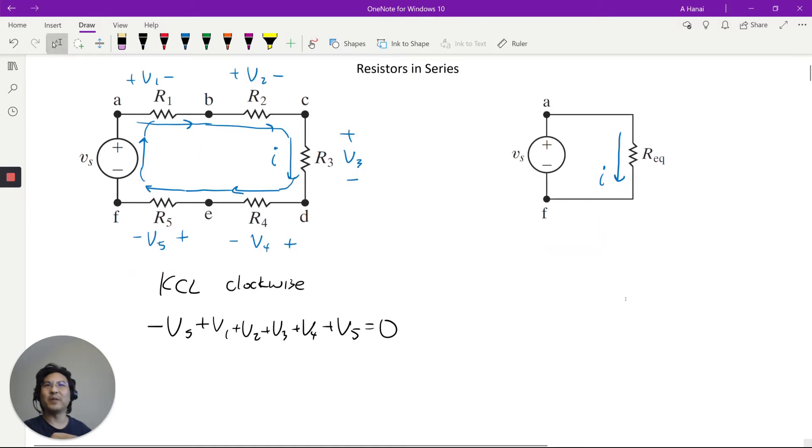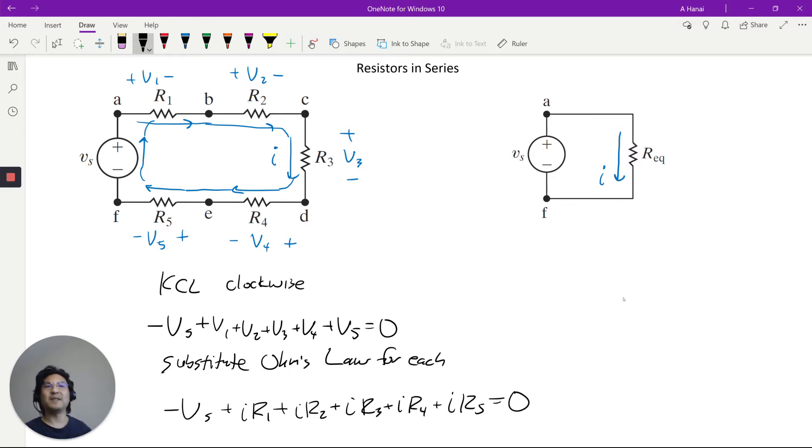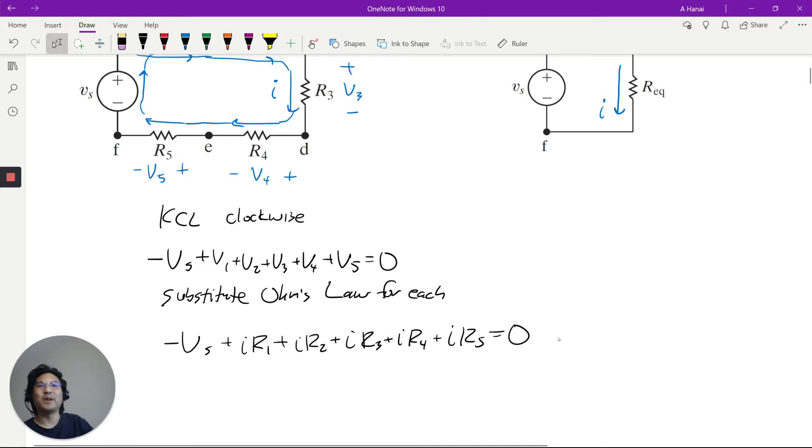And then the way I labeled them, Ohm's Law, right, positive V equals positive IR, V equals positive IR. I labeled all of them so that Ohm's Law is positive. All right, so for V1, positive IR, for V2, positive IR, et cetera. They're all the way I labeled them. So then we can factor out, I'm going to move this to the other side, and then factor out I.